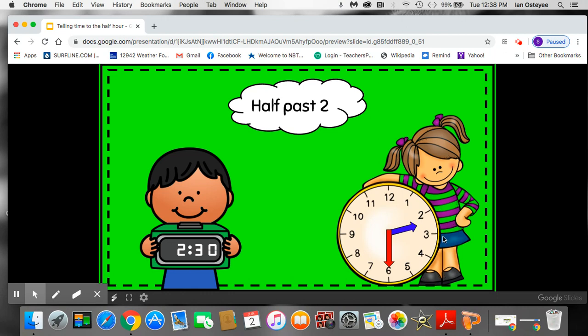5, 10, 15, 20, 25, 30. 2, 30. Let's check our digital time to make sure. Sure enough, the hour hand says 2. The minutes have gone by are 30. It is 2:30.